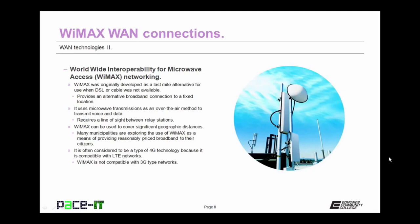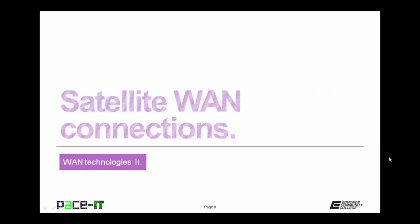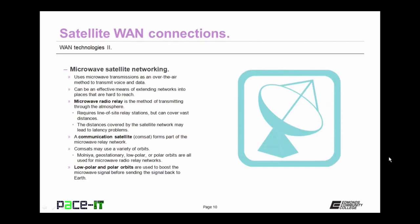WiMAX is often considered a type of 4G technology because it is compatible with LTE networks, but WiMAX is not compatible with third-generation cellular networks. Satellite WAN connections are a type of microwave satellite networking that uses microwave transmissions as an over-the-air method of transmitting voice and data — just like WiMAX. It can be an effective means of extending networks into places that are hard to reach, and it uses microwave radio relay as the method of transmitting data through the atmosphere.